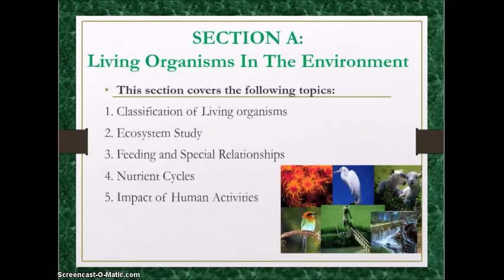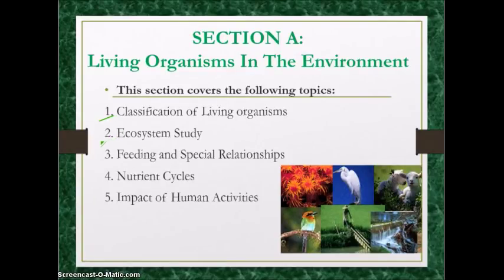Let's look at Section A, Living Organisms in the Environment. This section covers classification and characteristics of living organisms — you should know the levels of classification and the seven characteristics of living organisms. Secondly, ecosystem study, which includes sampling methods such as the Quadrat and Line Transect, Tullgren Funnel Method, and Pitfall Traps. Those are all different sampling methods.